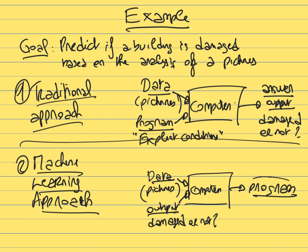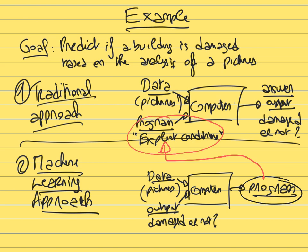The computer learns to recognize cracks on its own, coming up with rules that differentiate damaged from undamaged buildings. Once it has that program, you can go back to a conventional approach — using the learned program on new pictures to make predictions about whether a building is damaged.